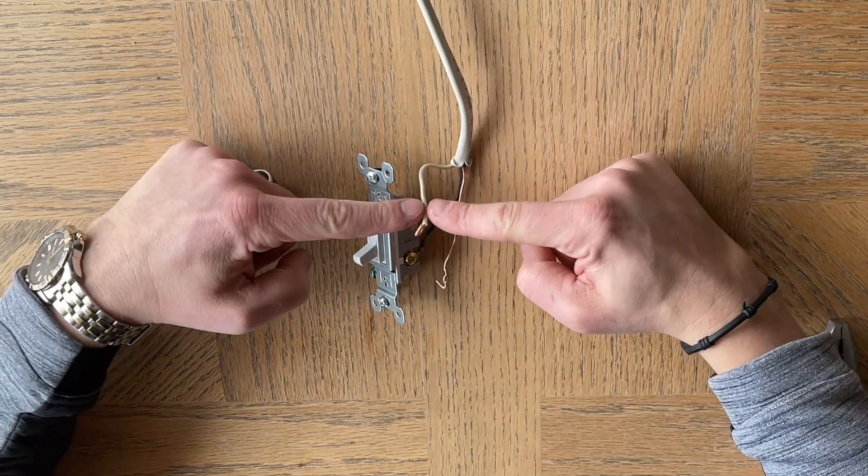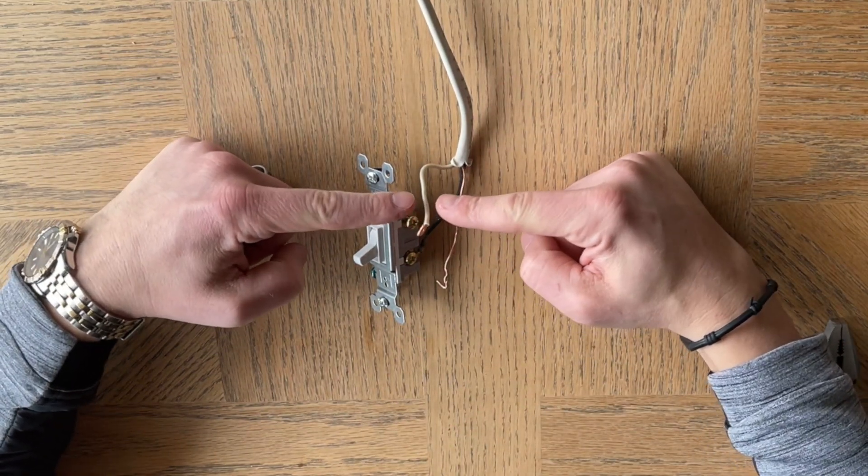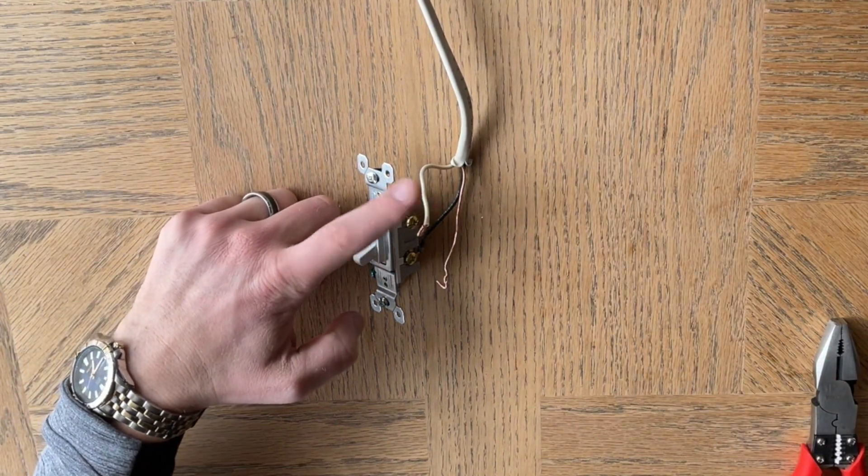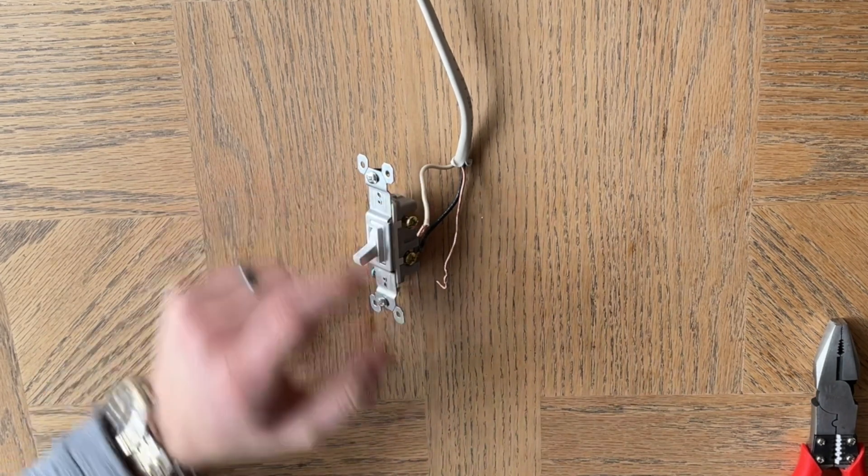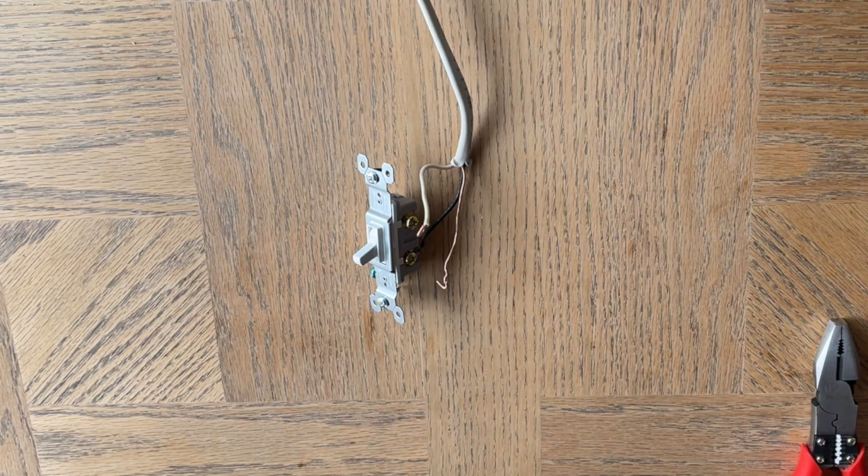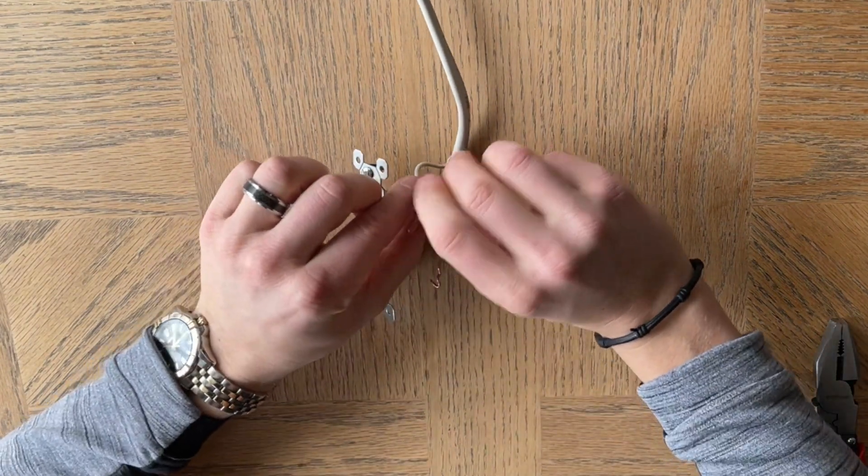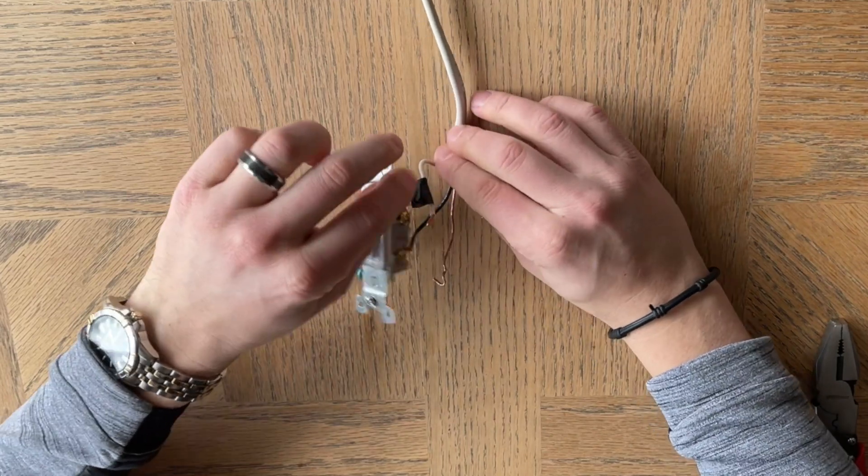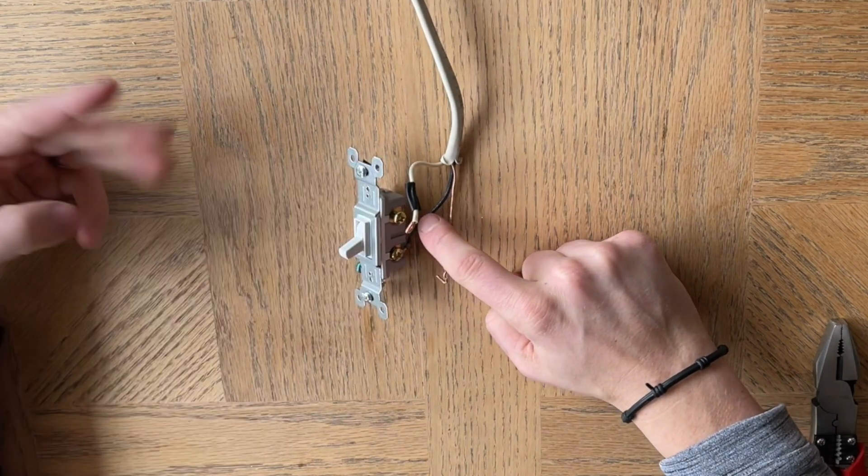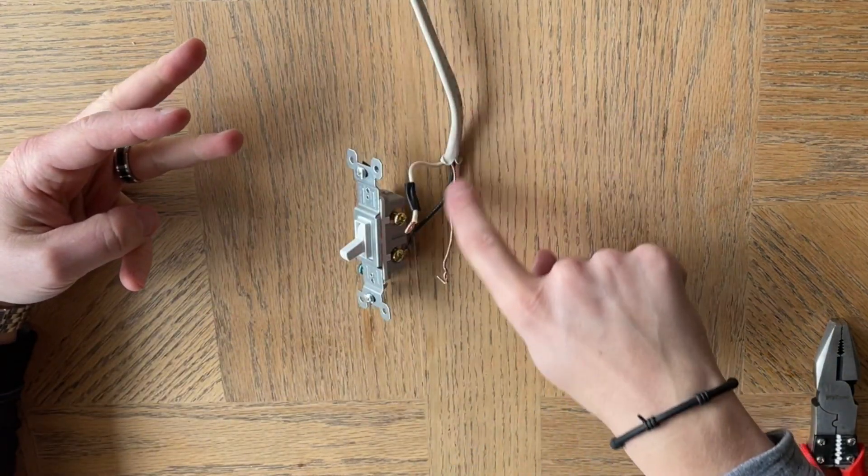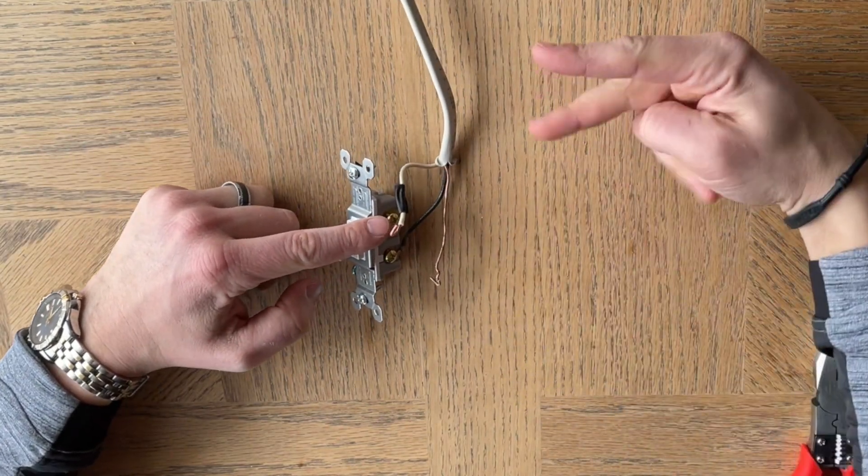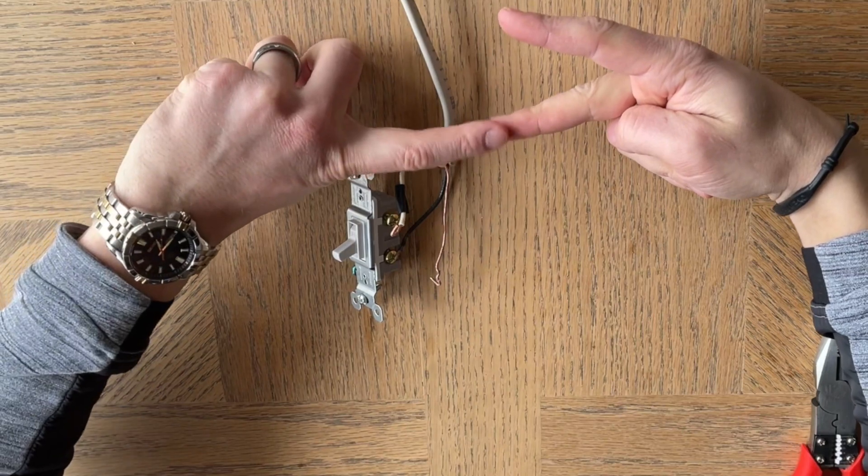And then this white wire is going to become a hot wire. And so sometimes this will be labeled or it will be taped, maybe with some electrical tape. And if it's not, then you should definitely label it so that you remember what it is. This is going to become a hot wire. And why do we say that? Well, because it's going to take the heat from the fuse box or the circuit breaker that's coming down here. And then it's going to bring this up and it's going to connect to the black wire on the light fixture.